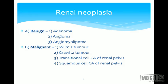Benign lesions can be of three types: renal adenoma, renal angioma, and a combination — renal angiomyolipoma. Malignant neoplastic lesions of the kidney include Wilms Tumor, Grawitz Tumor, Transitional Cell Carcinoma of the renal pelvis, and Squamous Cell Carcinoma of the renal pelvis.